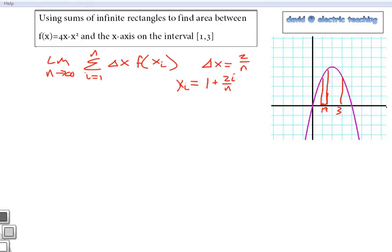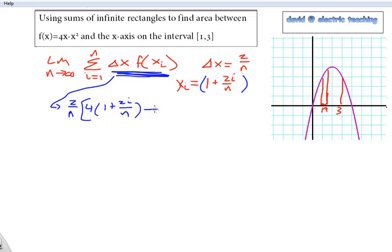I'm going to focus on this problem right here, the width times the height. We're going to try to get this simplified. The width is 2 over n times the height. Now I'm going to plug in the function, 4x minus x squared, this xi value. So that'll look like 4 times (1 plus 2i over n) minus that quantity squared: (1 plus 2i over n) quantity squared.